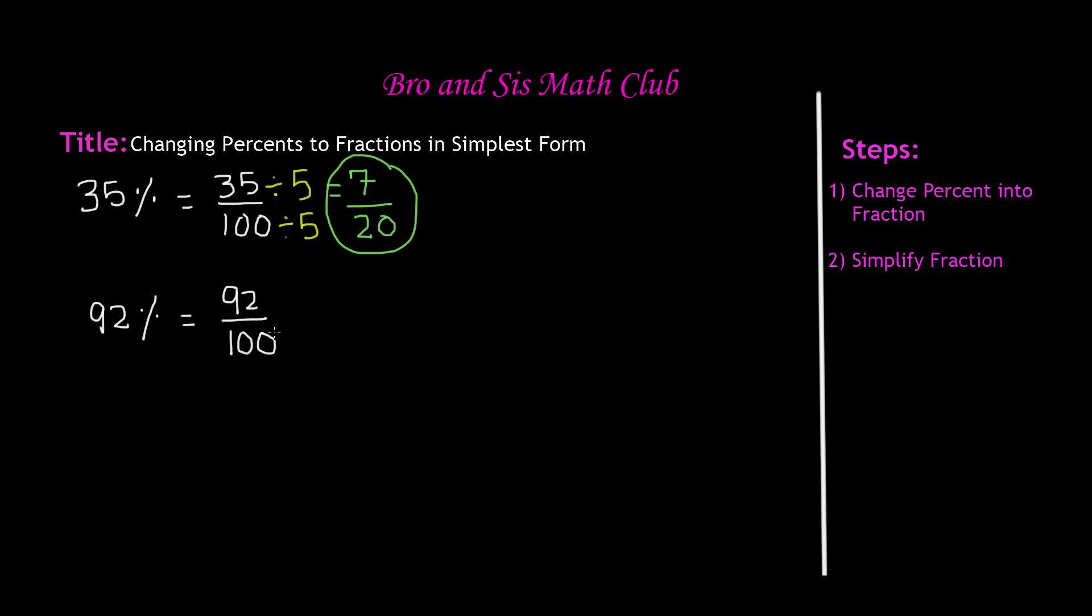So if we divide 92 by 2 and 100 by 2, because remember, we have to use the same number on both, we know that 92 divided by 2 is equal to 46, and 100 divided by 2 is equal to 50.